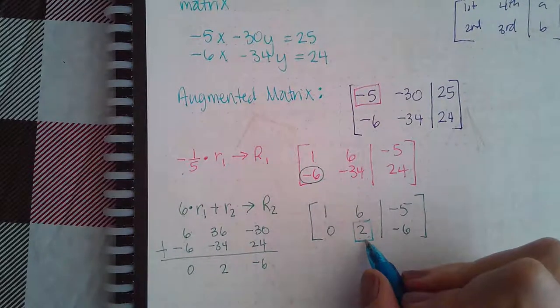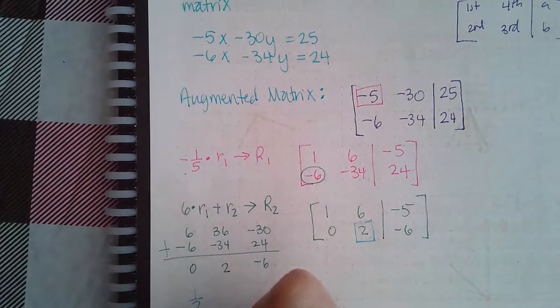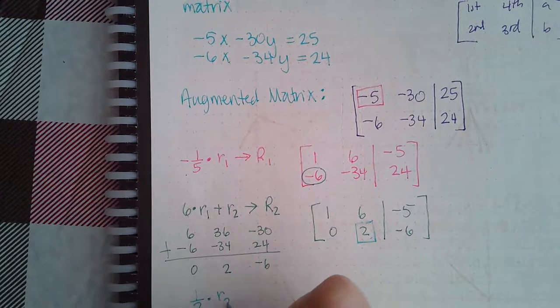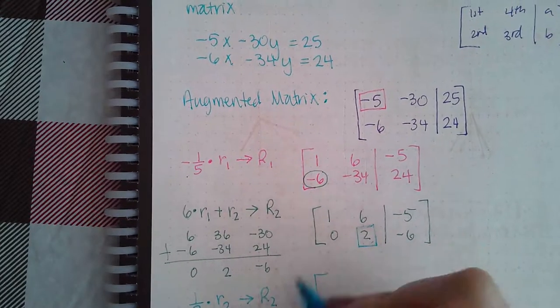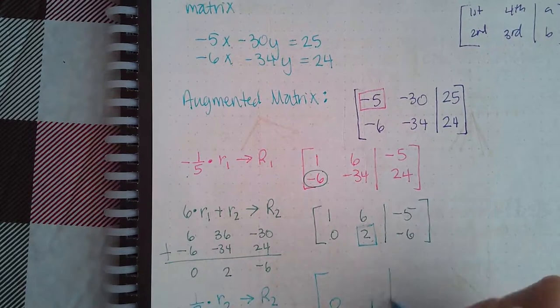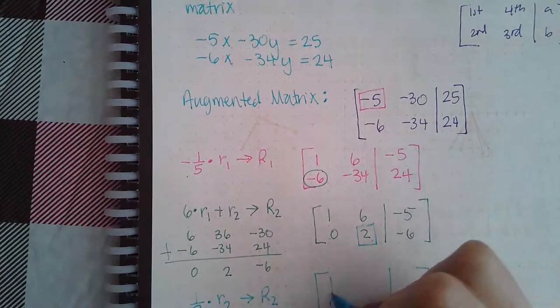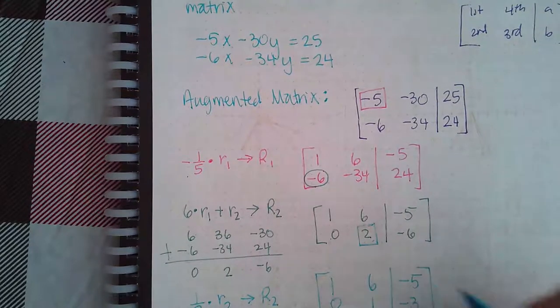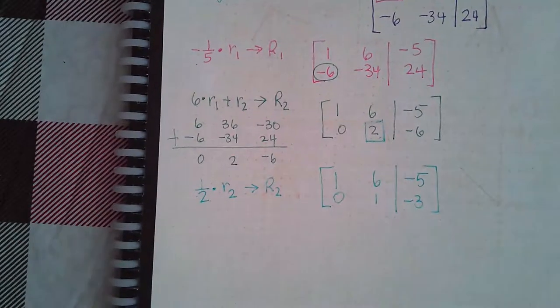So, here, I change it to a 1, which means I need to multiply by the reciprocal. So, I'm going to do 1 half times row 2 to get my new row 2. So, 0 times 1 half is still 0. 2 times 1 half is 1. And negative 6 times 1 half is negative 3. Row 1 is not changing in this step, so I'm just going to rewrite it.